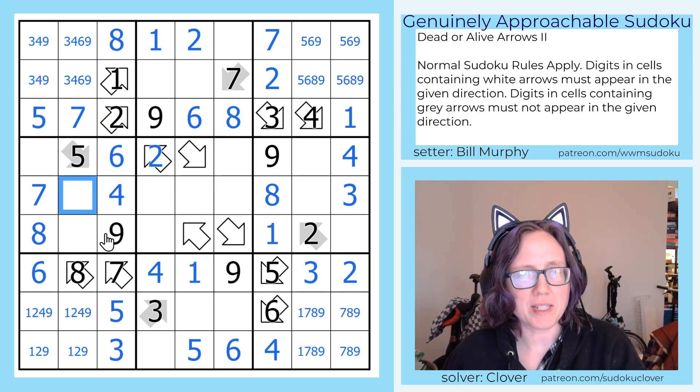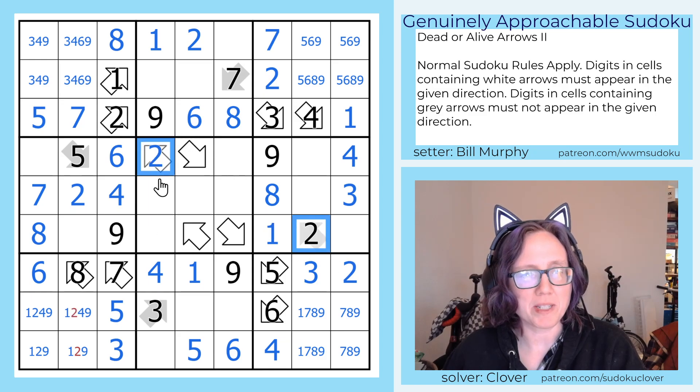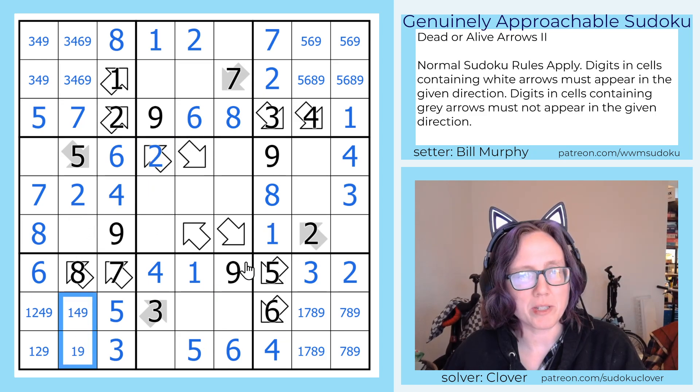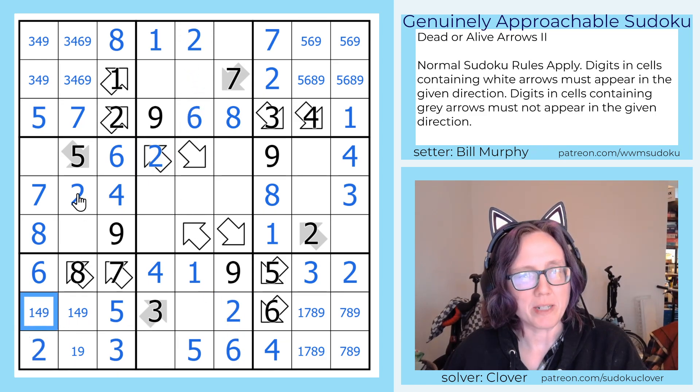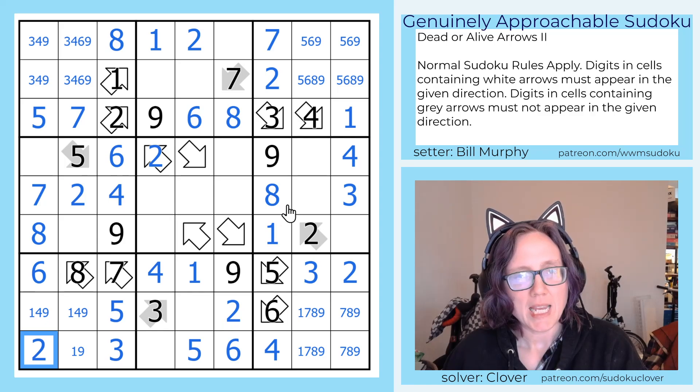That gives us a few cute little things. It tells us that there's a 2 there in that region because of these two 2s, which eliminates 2 down here. It also tells us that 2 is in this cell because of these two 2s, which eliminates a 2 here, and we can actually now place a 2 in that region right there.